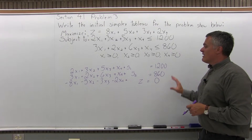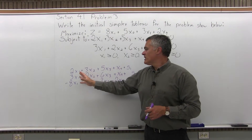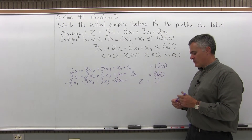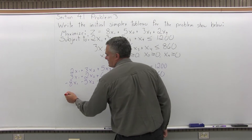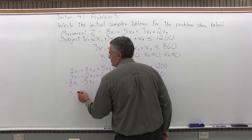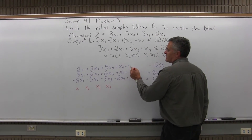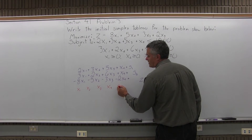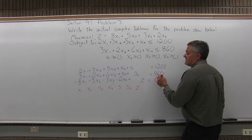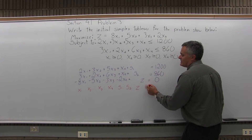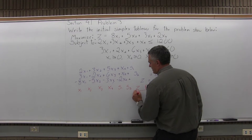Now I have every constraint and the objective equation written as equations with variables lined up, so it can be written as a matrix. With a matrix this large it's best to label your column headings: x1, x2, x3, x4 — there is no x5 — then s1 and s2, then z. After the equals I have some numbers, so I label that column RHS, which stands for right-hand side. I'll put a line — most books do.